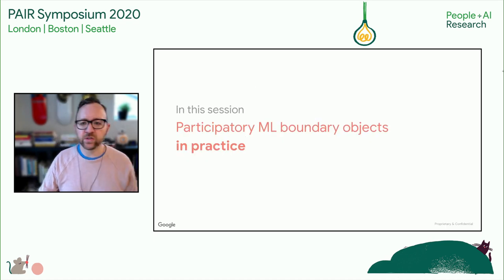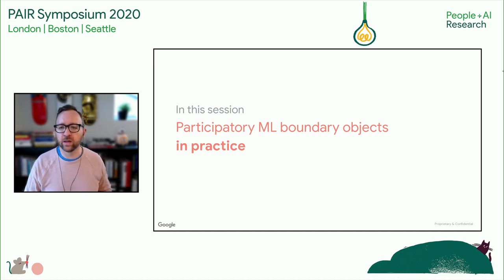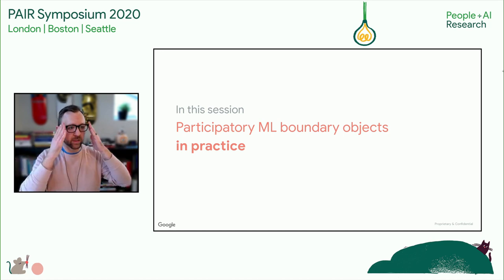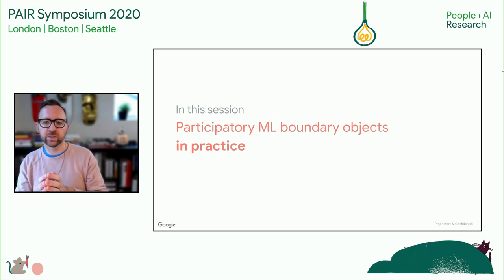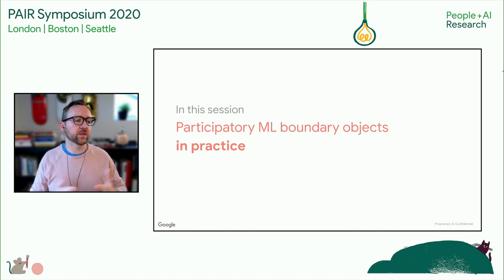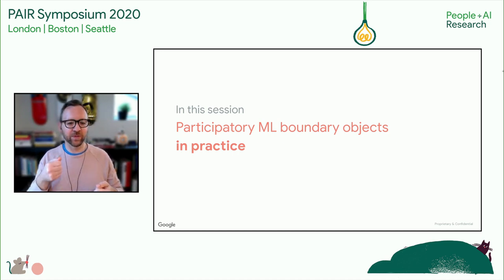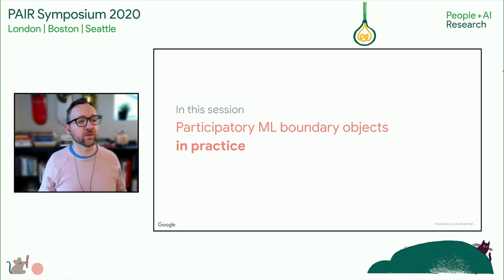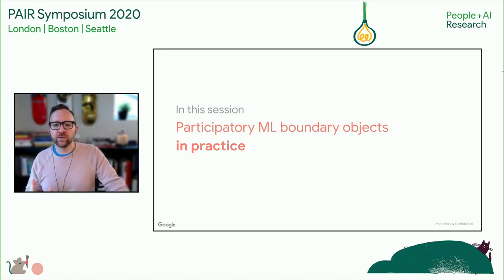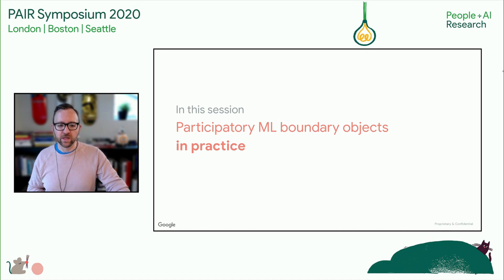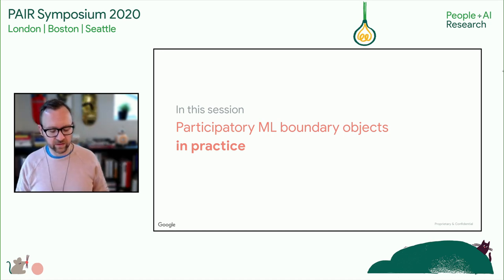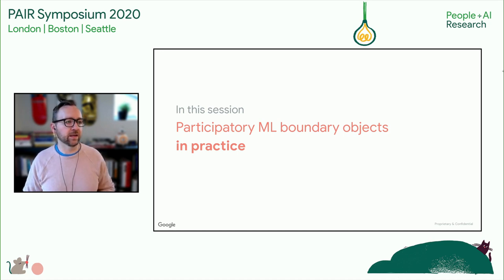In this session, we're really going to look at participatory ML boundary objects in practice. We've looked at things from a theoretical point of view, and Martin and his panel zoomed in on objective functions. Our panel talks are all about people who have made something that has made contact with the real world — people who aren't ML or AI developers — and learning from what happened. Can you give me some examples? There are many different things that can be boundary objects.